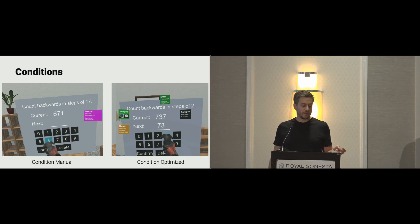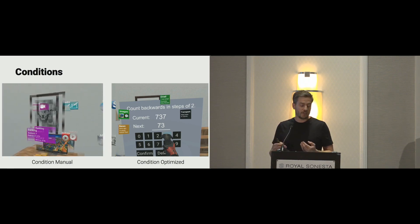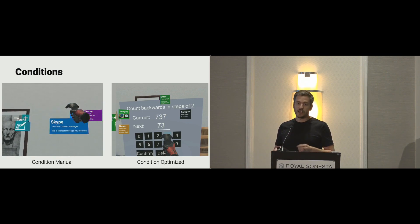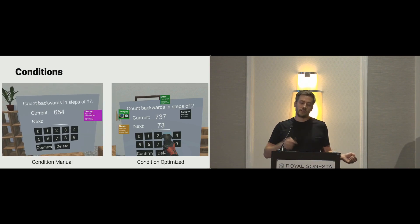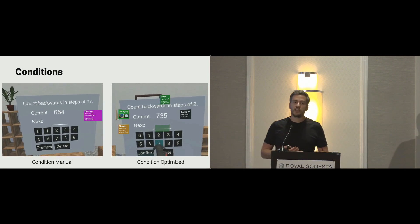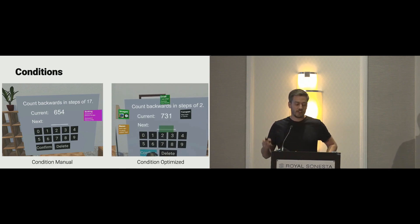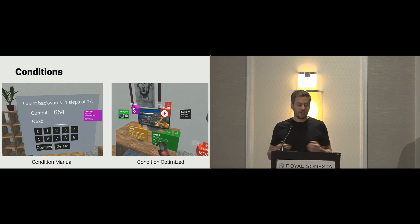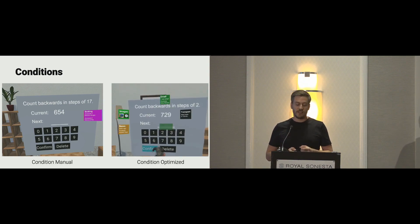We tested two main conditions. In the manual condition, the user counts backwards in steps of 17, gets asked a question such as 'who is your second Skype contact?', answers verbally (logged by the experimenter), and then moves back to the task. In the optimized condition, our system has rough knowledge of the tasks the user is trying to achieve and suggests the placement — the when, where, and how of virtual elements — while users can still adapt it to fulfill the secondary task.